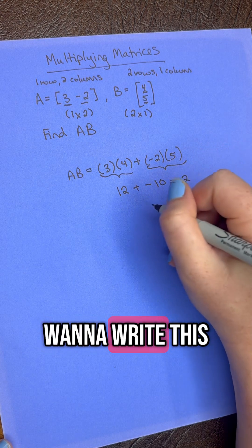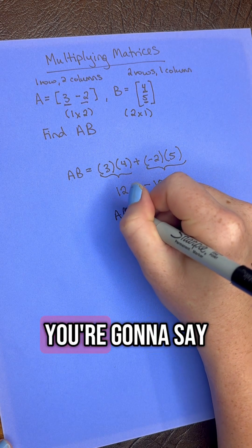And then you want to write this in matrix form. So you're going to say A B equals 2 and box your answer.